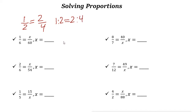To solve a proportion we can use cross multiplication. Take a look at this example: 1/6 equals x over 60. If you notice that 6 multiplied by 10 gives you 60, you need to do the same thing for the numerator. So times that 1 by 10 — 1 times 10 is 10. So x is 10.